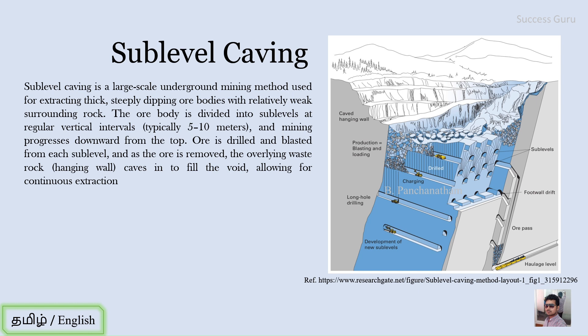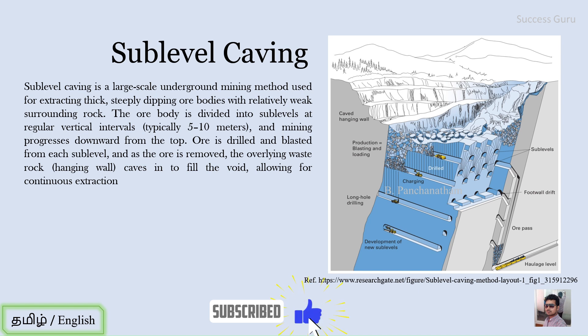The term 'level' is used because the ore body has a strike, since it is inclined. Tunnels are driven parallel to the strike of this formation, which are called sub-levels. The spacing between sub-levels can be in the range of 5 to 10 meters, depending on the strength of the ore body. The ore is drilled and blasted from each sub-level.